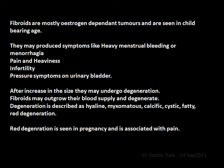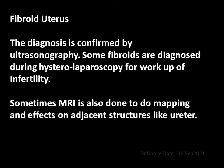After increase in size, they may undergo degeneration. Fibroid may outgrow their blood supply and degenerate. Degeneration is described as hyaline, myxomatous, calcific, cystic, and fatty. Red degeneration is seen in pregnancy and is associated with pain.